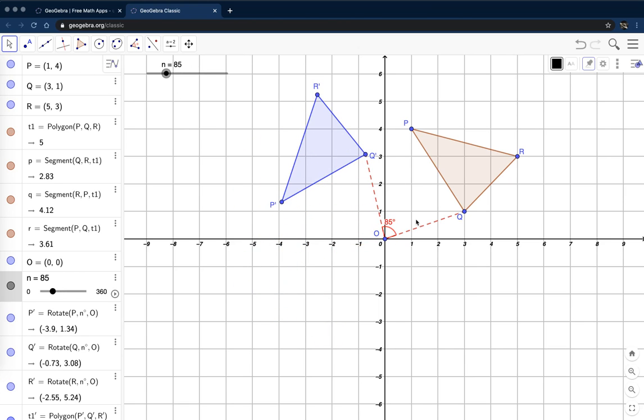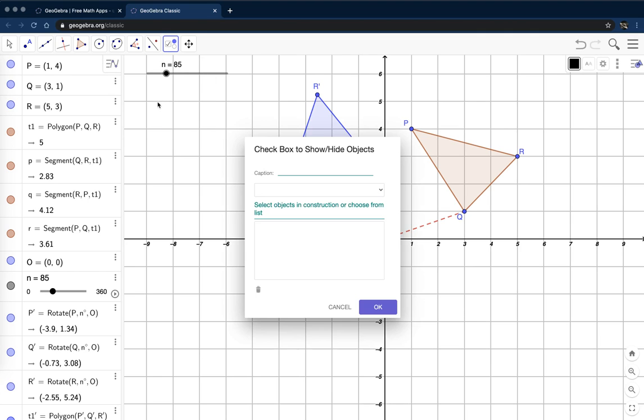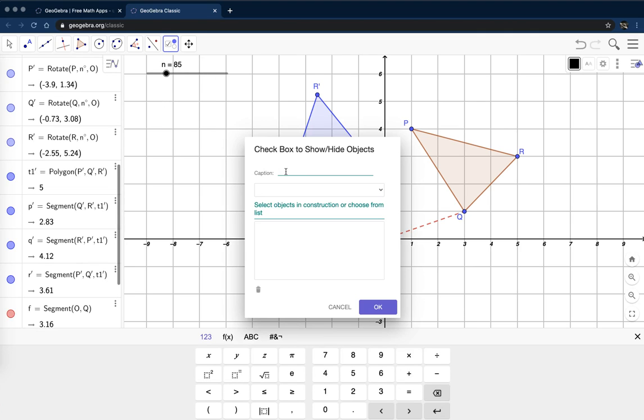Now, if we don't want that to be visible, we can add a checkbox. So come over to the slider tool, choose a checkbox, and put a checkbox here. I'm going to say show, hide, angle of rotation.